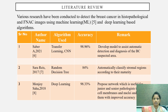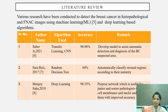Various studies have been conducted to detect breast cancer in histopathological and FNAC images using machine learning and deep learning-based algorithms. Sabir A developed a model to assist in automatic detection and diagnosis of breast cancer suspected areas, using transfer learning and convolutional neural network, achieving accuracy of 98.96%. Sara Reyes automatically classifies stromal regions according to their maturity using a random decision tree, achieving accuracy of 84%. Monjay Shah proposed a network for classifying cell membranes and nuclei using a deep learning algorithm, achieving accuracy of 98.33%.